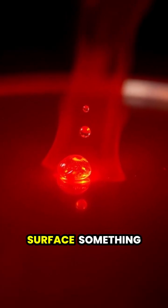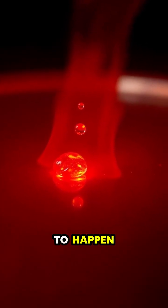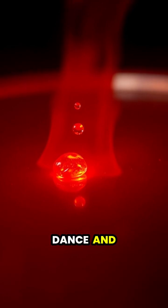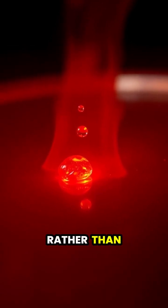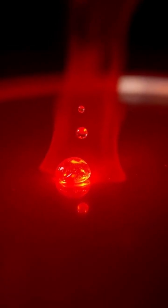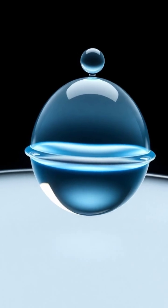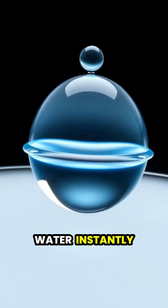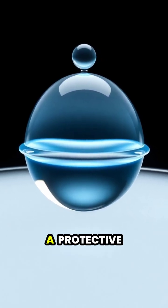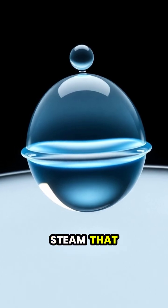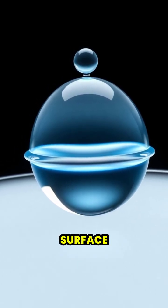When water meets an extremely hot surface, something magical seems to happen. The droplets appear to dance and hover above the surface rather than instantly evaporating. This floating phenomenon occurs because the bottom layer of the water instantly vaporizes, creating a protective cushion of steam that prevents the rest of the droplet from touching the scorching surface.